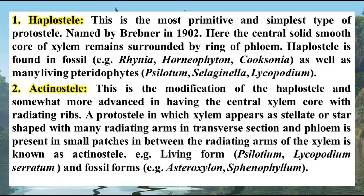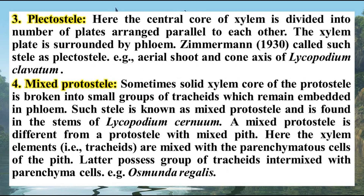There are four types of protostele. Haplostele is the simplest form. Actinostele is where the stele looks like a star, with xylem in the center surrounded by patches of phloem — found in Psilotum. Plectostele is where the central core of xylem is divided into a number of plates — found in Lycopodium clavatum. The fourth type is mixed protostele, where the central core of xylem is broken into small groups — found in Lycopodium cernuum.